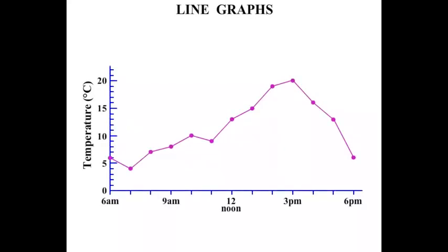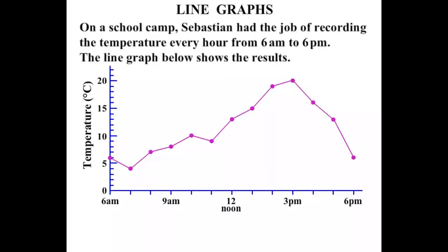In this lesson we do some work on line graphs. Here is an example of a line graph. We have some times along the bottom axis and some temperatures on the side axis. We are told that on a school camp, Sebastian had the job of recording the temperature every hour from 6am to 6pm. The line graph below shows the results.